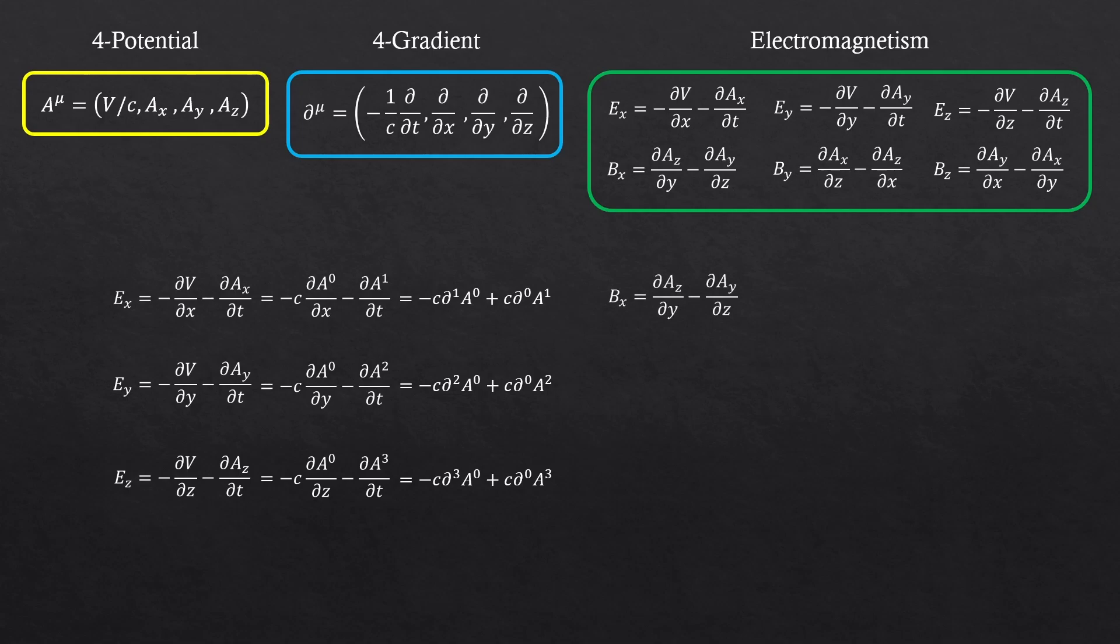Now, the magnetic fields. Same thing. Az is the last element here. So it should be A3. And Ay corresponds to A2. And d over dy is the d2 here. And d over dz is the d3 here. Because our index number starts from 0. 0, 1, 2, 3, right? We do the same thing again for the other ones.